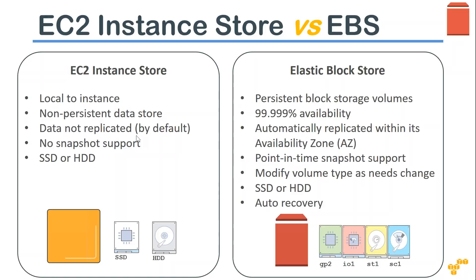With EBS you can create point-in-time snapshots and use multiple disk types. Certain types of EBS volumes also support auto-recovery for your server. If your root volume is on EBS and your instance supports auto-recovery, whenever hardware fails, since the data is persistent, it can be automatically copied to another hardware and your server can start without any problems. That auto-recovery is possible only with EBS volumes.